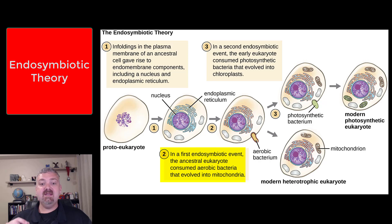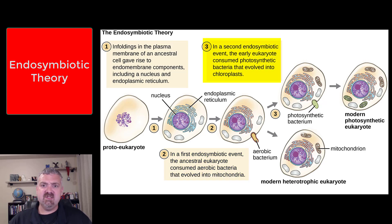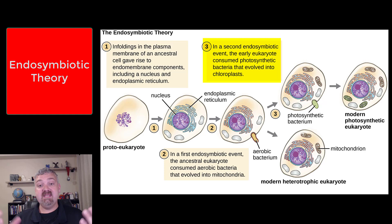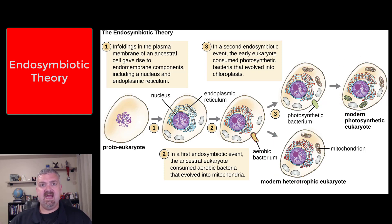Number two, in a first endosymbiotic event, the ancestral eukaryote cell consumed an aerobic bacteria that would have evolved into the mitochondria. Number three — in a second event, an early eukaryotic organism that was photosynthetic would have been taken up and became the chloroplast. And that's what we're seeing here at the end: cells that have chloroplasts and mitochondria inside of them that have evolved from cells that would have first taken them up.